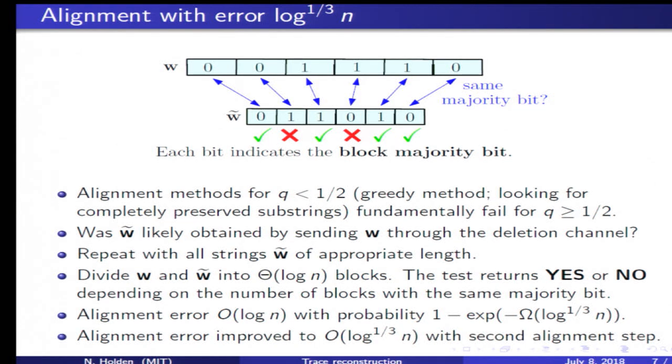This gives us alignment with error log n. By doing a refined second alignment step, we can get it down to q root log n. That's it. Thanks.